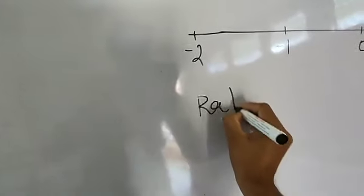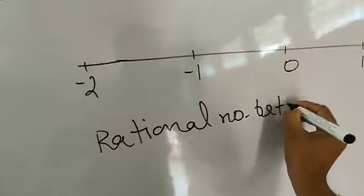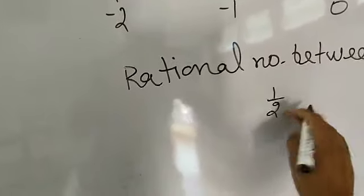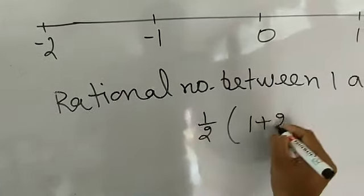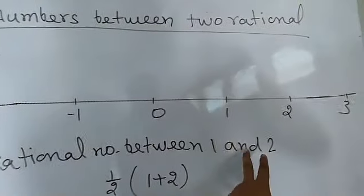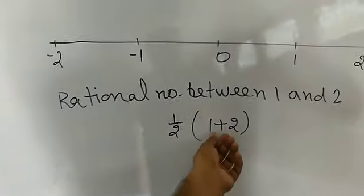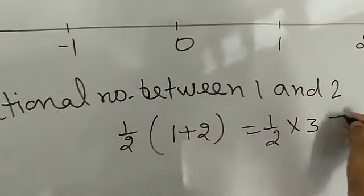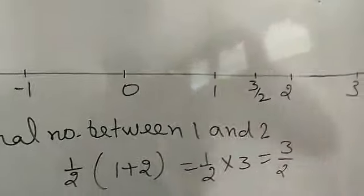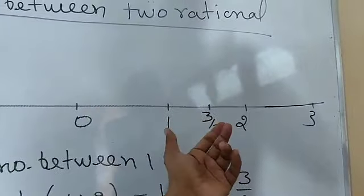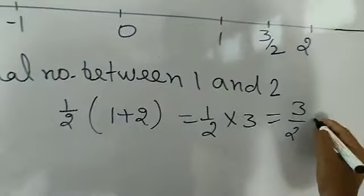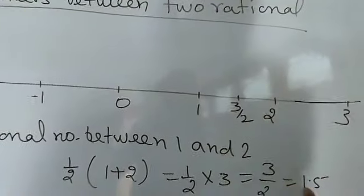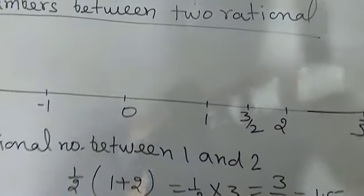To find a rational number between 1 and 2, take half the sum of the two numbers: one-half of (1 + 2) equals one-half times 3, which equals 3 by 2. So 3 by 2 is a number greater than 1 and less than 2 — that is the rational number between 1 and 2. We can verify: 3 by 2 equals 1.5, and 1.5 is indeed greater than 1 and less than 2.